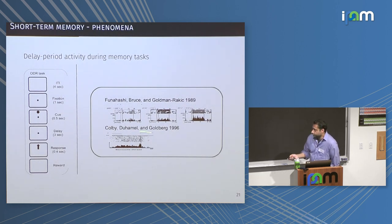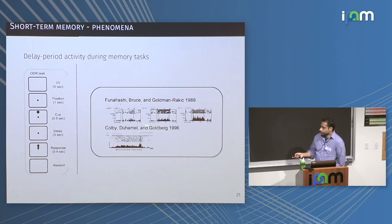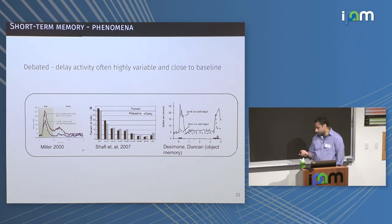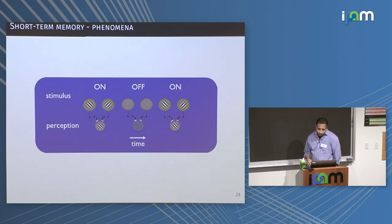This is the classic ocular motor delayed response task: the monkey fixates, a target appears, the monkey is not allowed to look at it until the fixation cue disappears, then looks at it. If you record from PFC or lateral intraparietal areas, you see elevated delay period activity tuned to the target. However, there's been a lot of debate about this — Miller's review shows that with a very trained situation, this delay period activity is actually very close to baseline. Shafi and others show it can be highly variable. And for object memory, you can also get delay period activity that's very close to baseline.